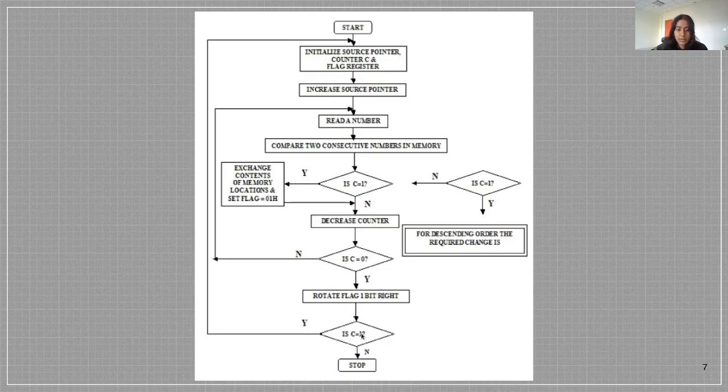Then we check if C is equal to 1. If yes we go back at the start of the program and we initialize the source pointer, counter, and flag register and begin all over again. If not we stop the program.